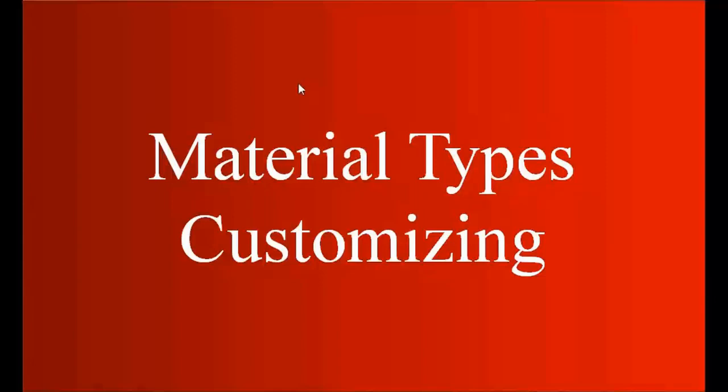Our next topic is material type customizing. As we've seen in previous topics, whenever we create a material we need to select a type. The type can be raw material, finished goods, trading goods, or semi-finished goods. In this topic we're going to see what the customizing behind those material types is and what their effects are. The topics we'll cover are: customizing new material types, material number range assignment, and field selection control.